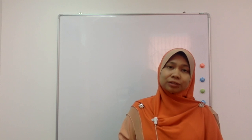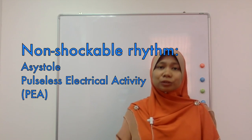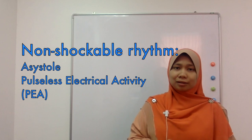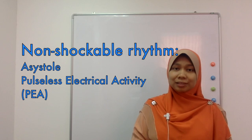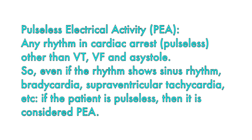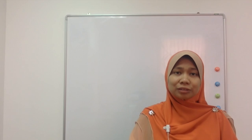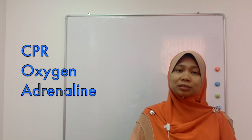If the patient has any rhythm other than ventricular fibrillation or pulseless ventricular tachycardia, we treat the patient as having a non-shockable rhythm. Under non-shockable rhythm we have asystole and pulseless electrical activity (PEA). PEA is any rhythm in cardiac arrest other than VF or VT — even sinus rhythm, bradycardia, or SVT — if the patient is pulseless it is PEA. The treatment is mainly CPR, oxygen, and adrenaline.